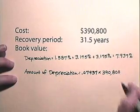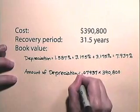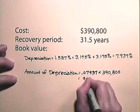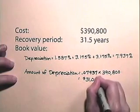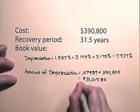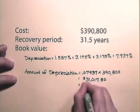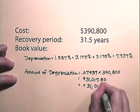This gives us $31,017.80, but we are asked to round that to the nearest dollar. So that will be $31,018.